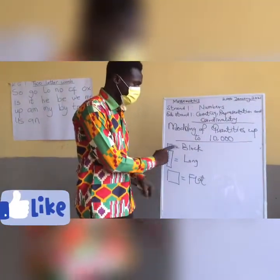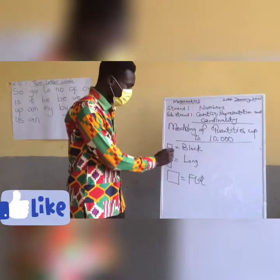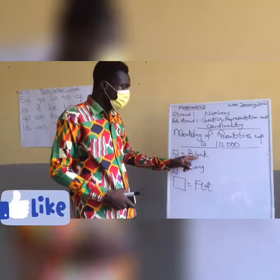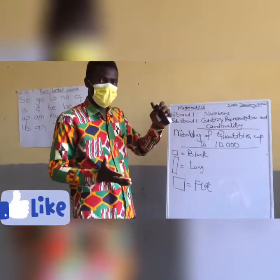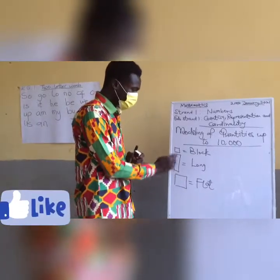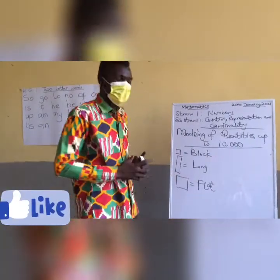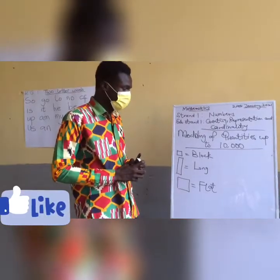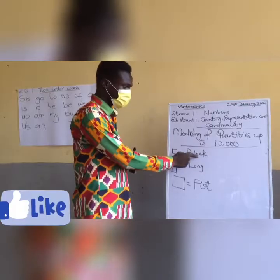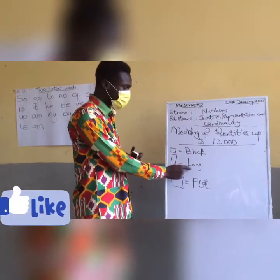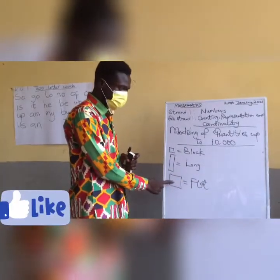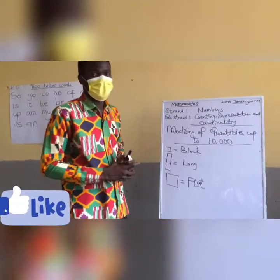One of these is a block. The long is made up of 10 blocks — so 10 blocks gives us one long. And the flat is made up of 100 blocks.